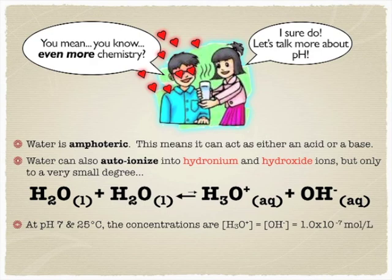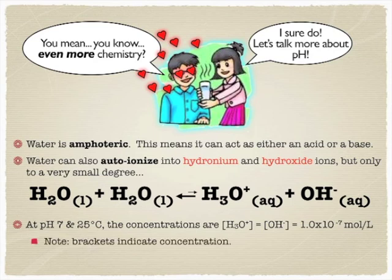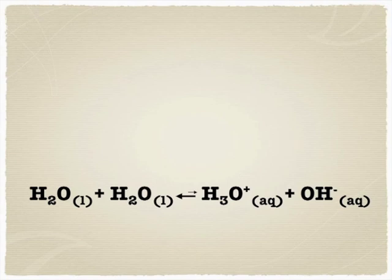At pH 7 at 25 degrees, you end up with the concentrations being equal at 1 times 10 to the negative 7th moles per liter. So there's not much there. And by the way, if you ever see brackets, brackets around an ion indicate concentration.